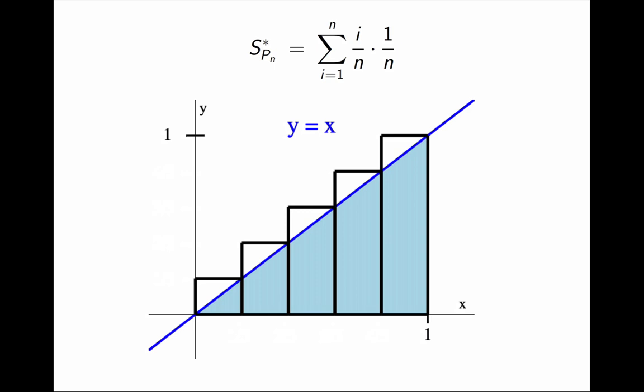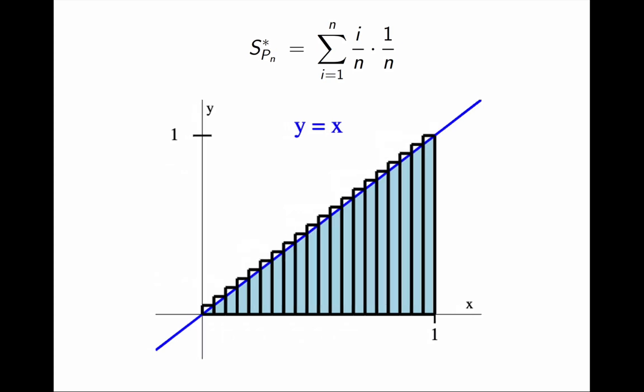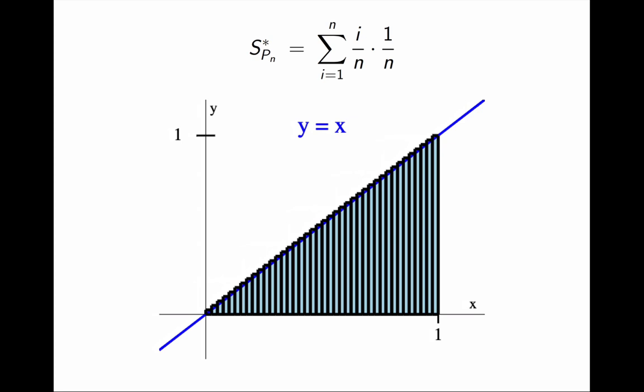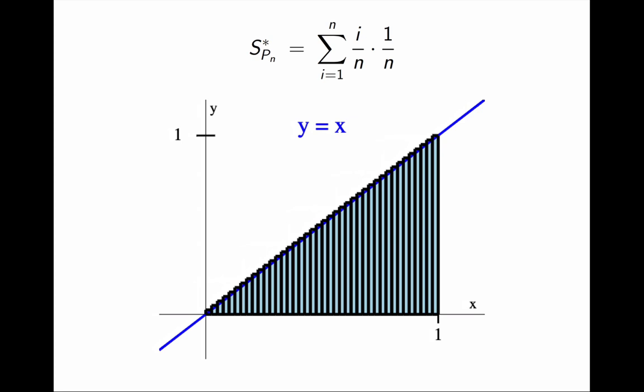Notice that in this case, the Riemann sum happens to be the upper sum as well, but that's an accident. And then I just have to take the limit as n approaches infinity. The rest is algebra. Okay, the integral from 0 to 1 of x dx is the limit as n approaches infinity of the sum from i equals 1 to n of (i/n) times (1/n).